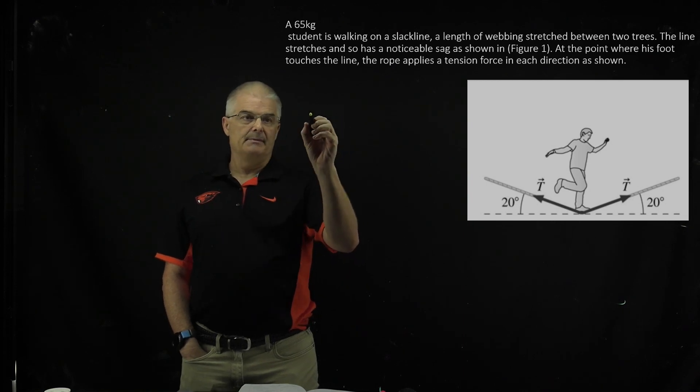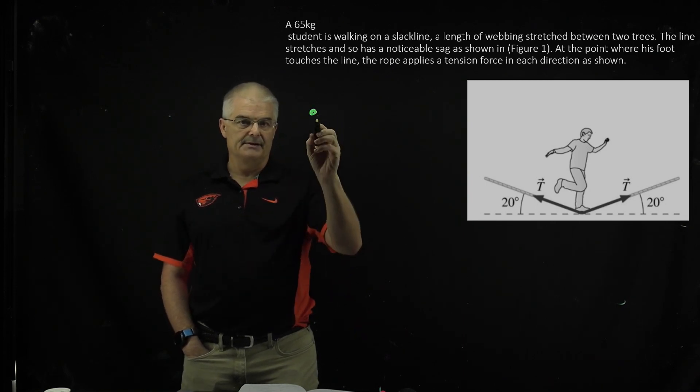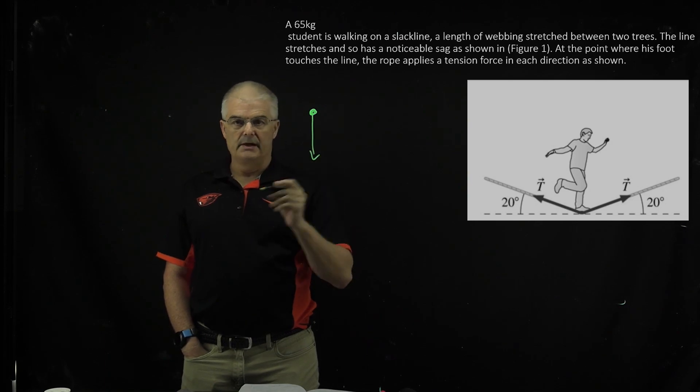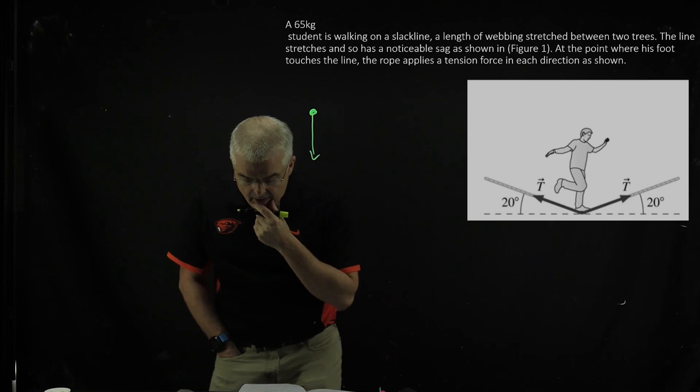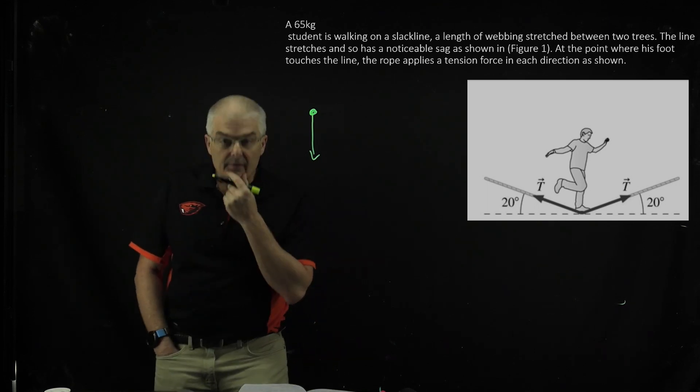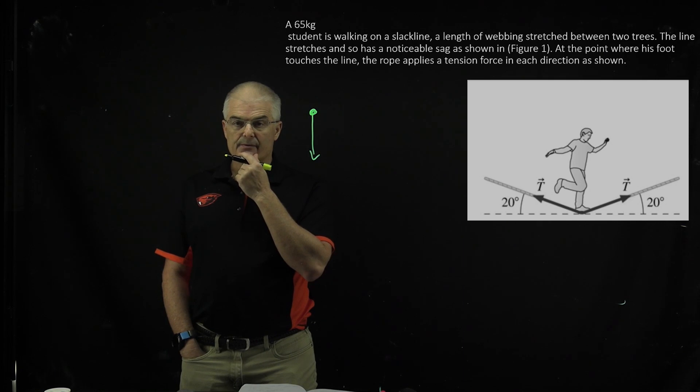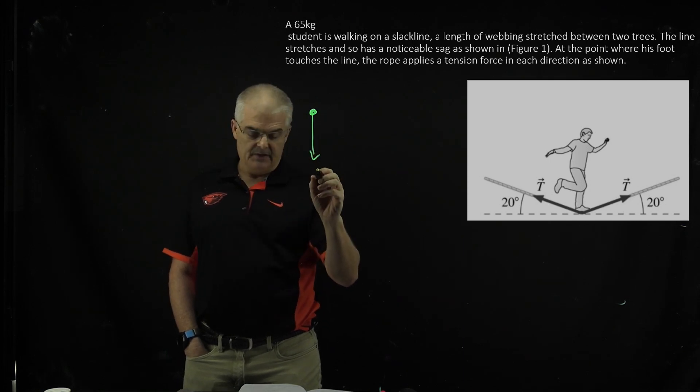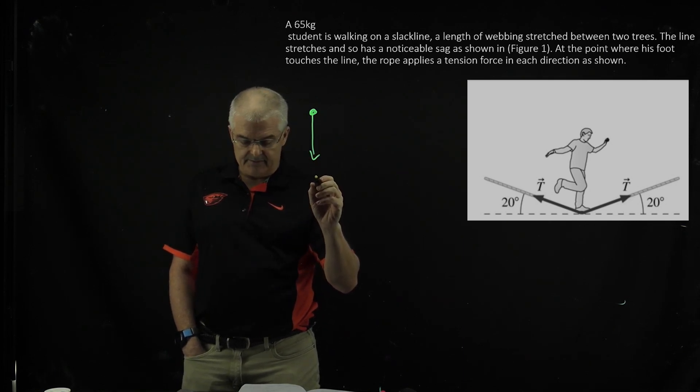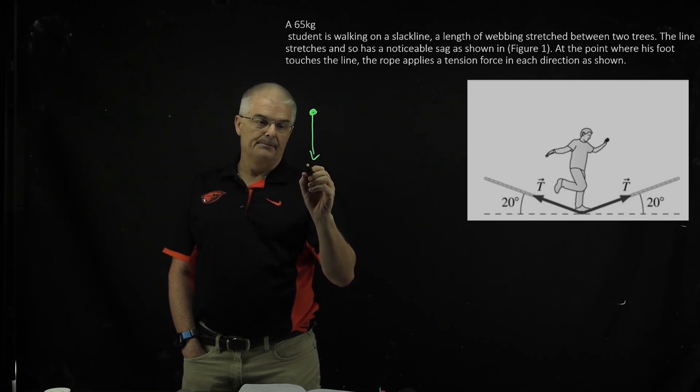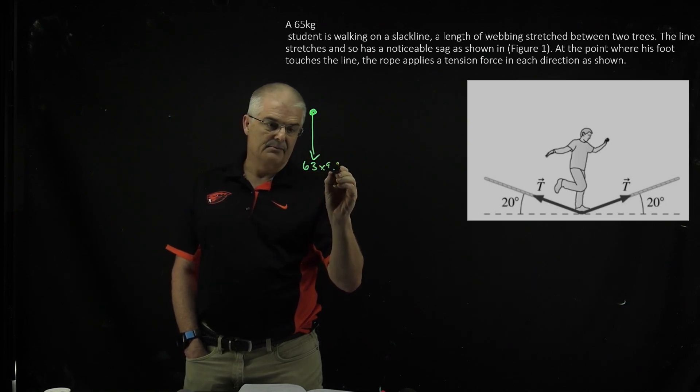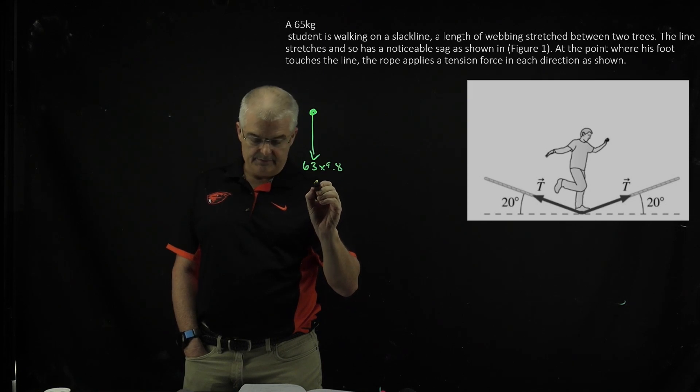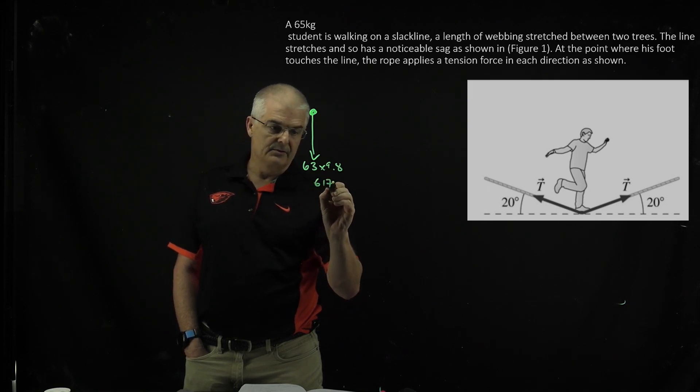Now the nice thing about this problem, I'm going to resketch it. Remember in a free body diagram you start with a dot, and we have a weight. His weight is 65 kilograms, actually I have 63, I have slightly different numbers here. 63 times 9.8, and I got this to be 617 newtons, that's going down.